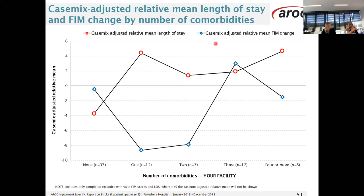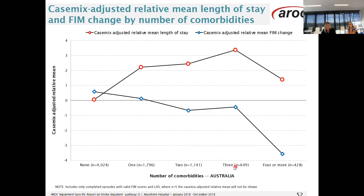This graph presents data for your service of the case mix adjusted relative mean length of stay represented by the red circles, and the case mix adjusted relative mean FIM change represented by the blue diamonds. The number of comorbidities are listed on the horizontal axis — the number of episodes reporting one comorbidity is 12 and three is also 12. Looking at the national graph which has higher volume, you can see that once a comorbidity is recorded, length of stay increases and FIM change starts to decrease. For example, for patients with three comorbidities their length of stay is just over three days longer and they are achieving slightly less FIM change.